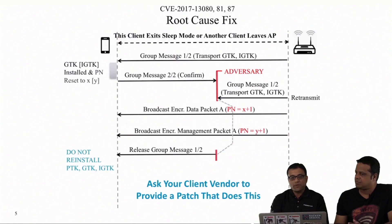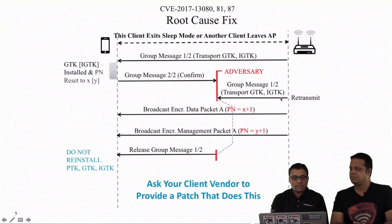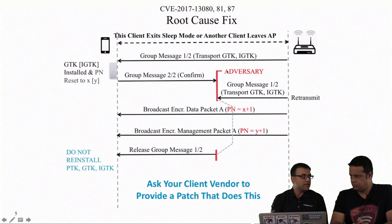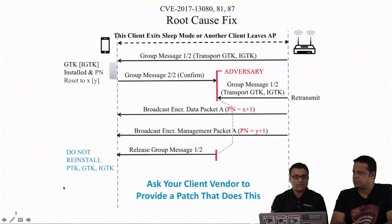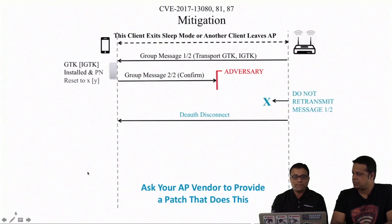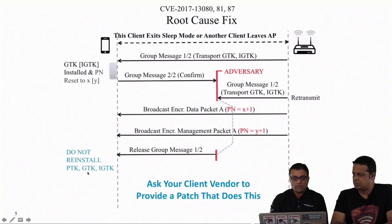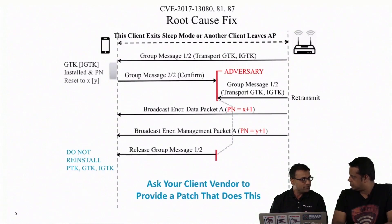In the group handshake, the root cause was the release of an earlier captured message. The adversary blocks the second message of the group handshake, causing the AP to retransmit it. The adversary holds the retransmit to stretch the interval and then releases it, so the client receives the message twice. The fix is: if the client receives the same key again, do not reinstall it — specifically, do not reinstall the GTK or IGTK, since this is just the group handshake. That way there is no packet number reuse and no replay happening.